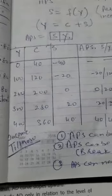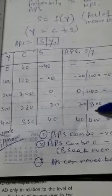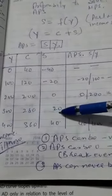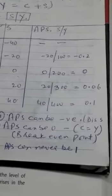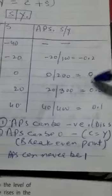Here, it is 20 upon 300. Income is 300, saving is 20. So, you will get 0.06 and in the end you will get 0.01. So, this is how you can find out.